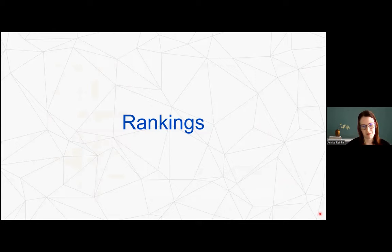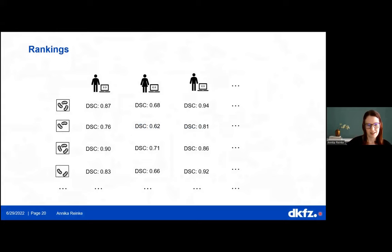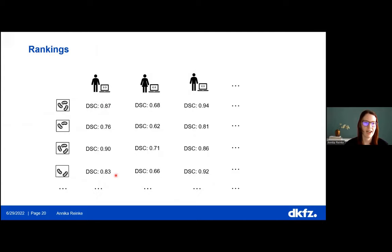Let's talk about rankings. Rankings in challenges are very important because they tell us which algorithm is the best working solution, so we should make sure they are reasonable. Suppose we have multiple participants, multiple images, and a metric score per participant per image. How do we compute a ranking? One approach is to aggregate metric values per participant and rank by the aggregate — using mean or median. Another approach is to create a ranking per image and then aggregate those ranks.